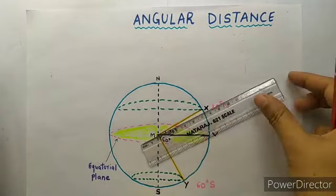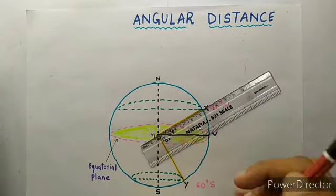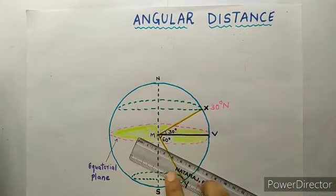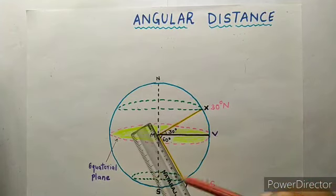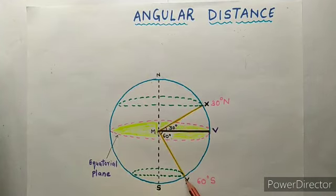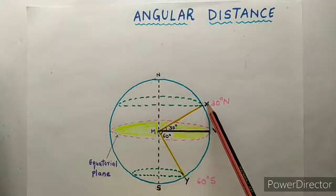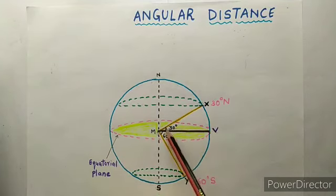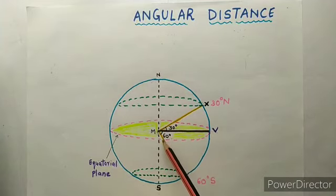Now with the help of a ruler, draw a line from the center to the surface of the earth for each angle. These two yellow lines are now drawn on the circle. Let's name these angles: angle XMV is 30 degrees and angle YMV is 60 degrees.